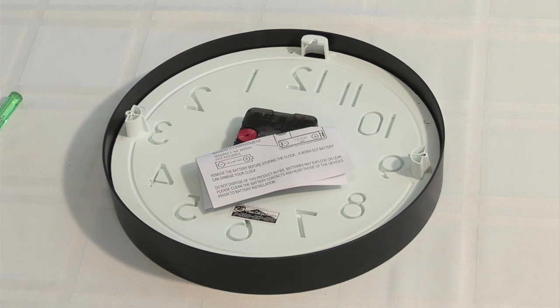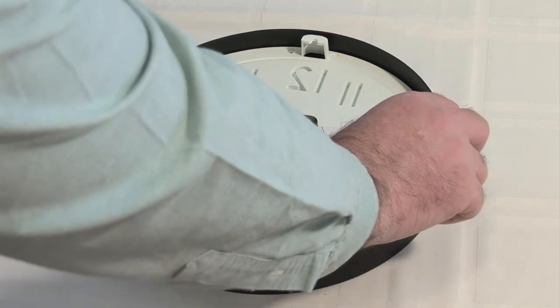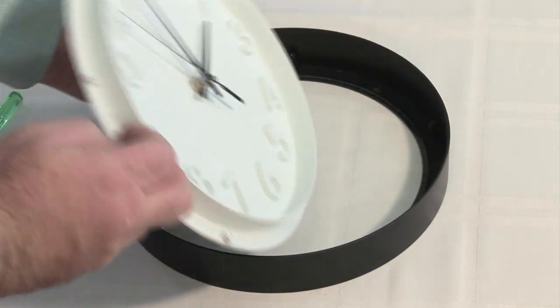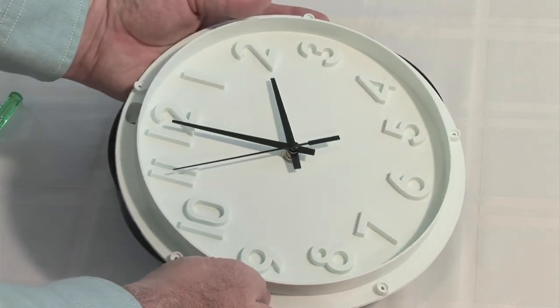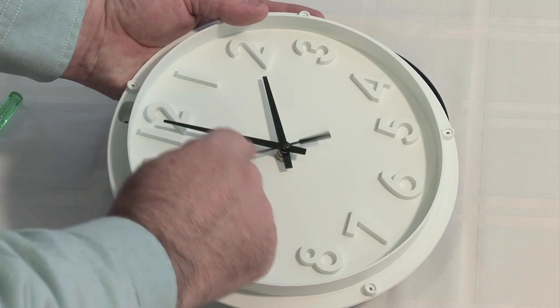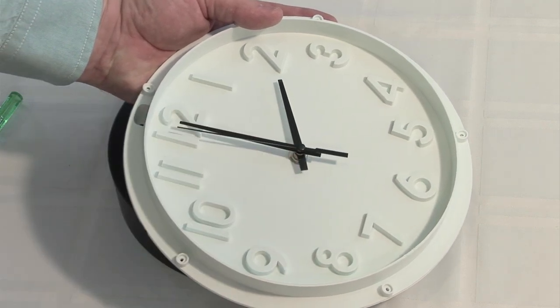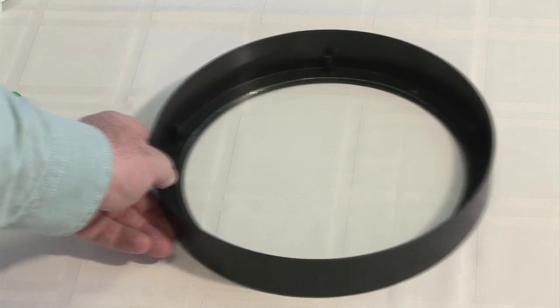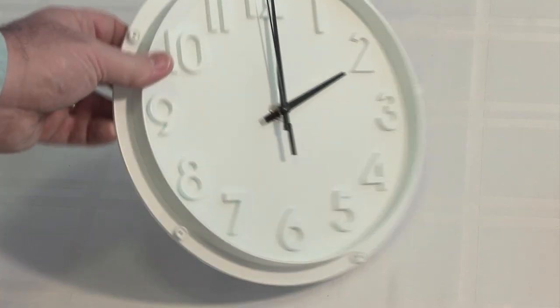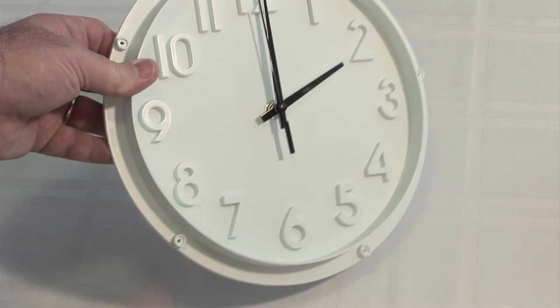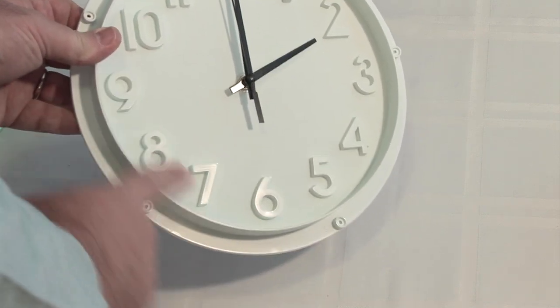Now that the screws are removed I can very easily just pull the back of the clock away from the front of the clock and I've got direct access to these hands that I need to take off. I'm going to set the rest of this aside. I want to keep it clean and not get fingerprints all over the glass because I don't want to have to clean it up later. So this is the clock I want to convert. It has these 3D raised numerals here that I really like.